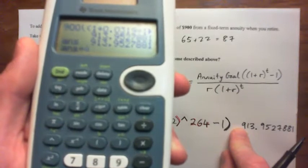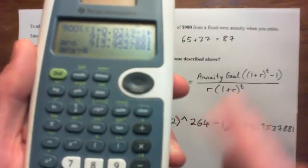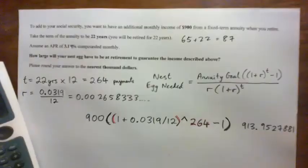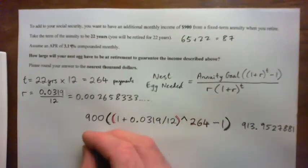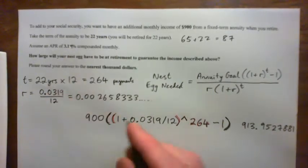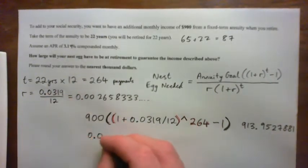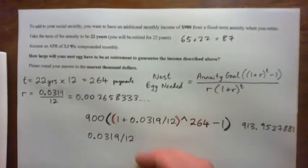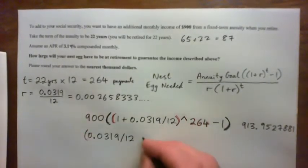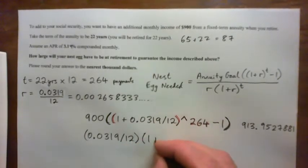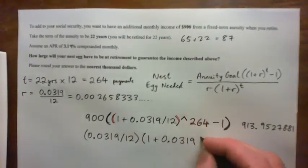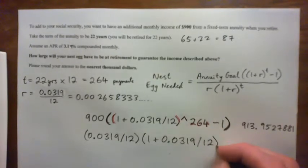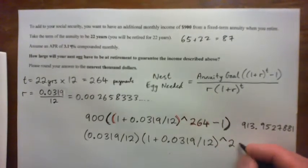So, I go answer divide by whatever I get on the bottom. The bottom, it's r times 1 plus r to the power of t, so r is this over 12. So I'm going to go 0.0319 over 12, and I might put parentheses around that, and then times that by 1 plus 0.0319 over 12. That's 1 plus r to the power of t, to the power of 264.